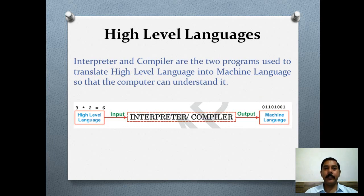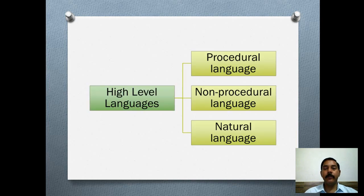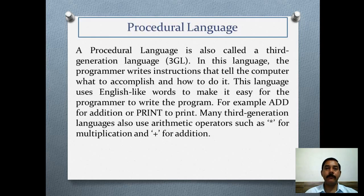Interpreter and compiler are the two programs used to translate high level language into machine language so that the computer can understand it. Whenever a computer programmer makes any program in high level language, one mediator program is required — either an interpreter or a compiler — which converts the high level language into machine language. High level languages are basically classified into three categories: procedural language, non-procedural language, and natural language.